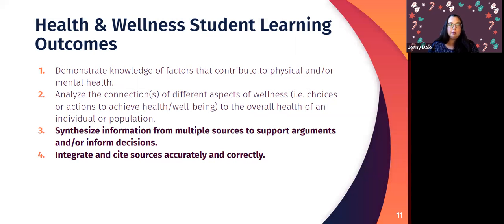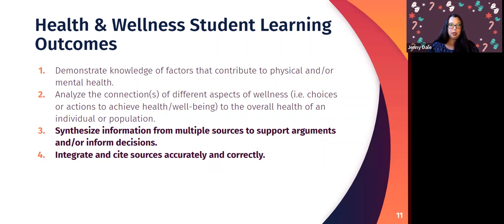The health and wellness student learning outcomes have some overlap with foundations — outcome four is the same: integrate and cite sources accurately and correctly. But health and wellness adds a new element: synthesize information from multiple sources to support arguments and/or informed decisions. Information literacy could also be happening in many MAC courses beyond these two competencies — in written communication, oral communication, humanities and fine arts, and really all competency areas.